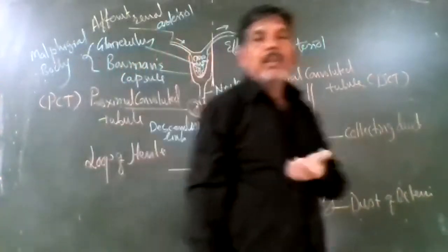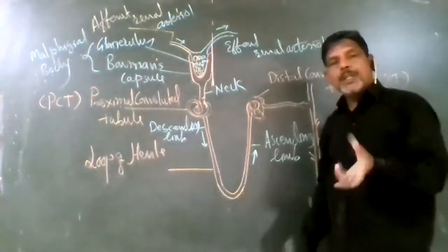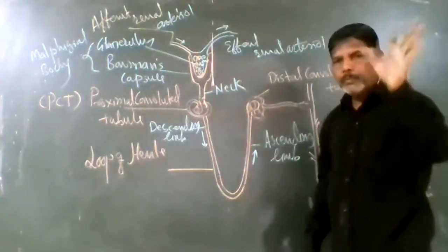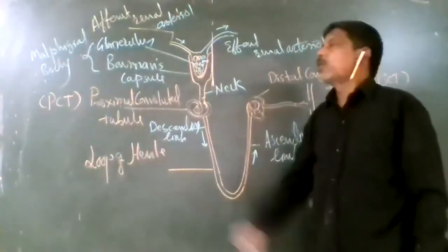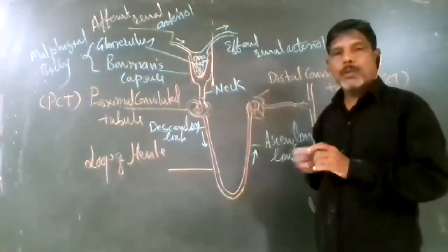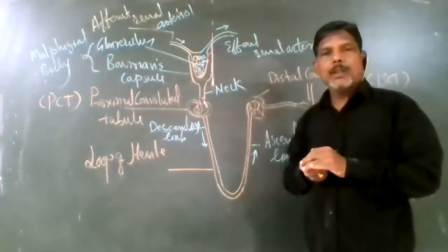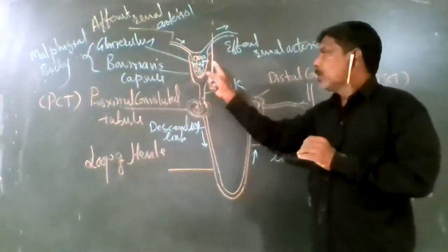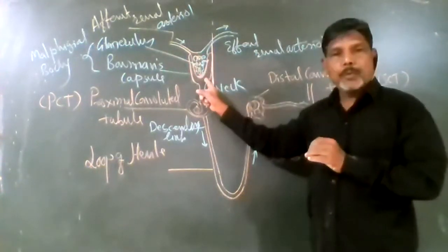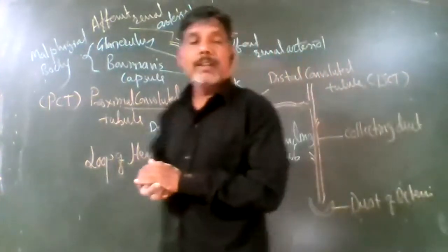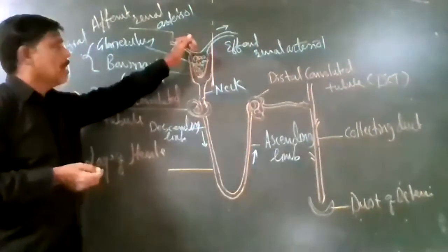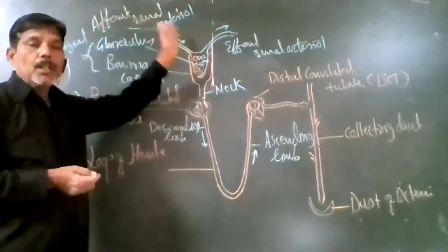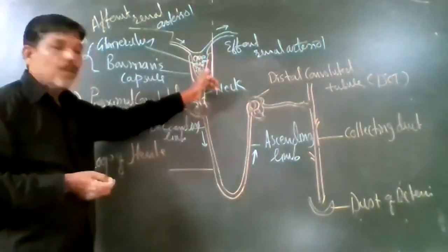The nephrons are the basic structural and functional unit of the kidney, responsible for urine formation. The Malpighian body is a very important part of the nephron, where filtration of blood takes place under high pressure. The afferent renal arteriole supplies blood containing urea and nitrogenous waste, and this blood is filtered into the Bowman's capsule through a process called ultrafiltration.